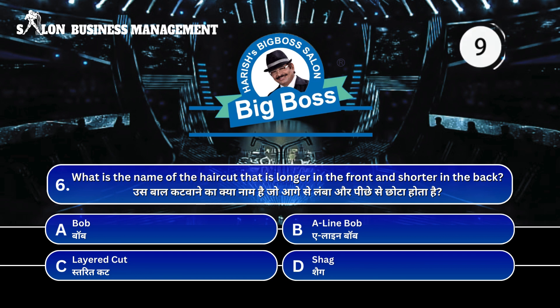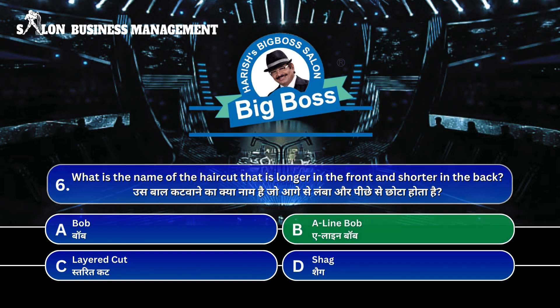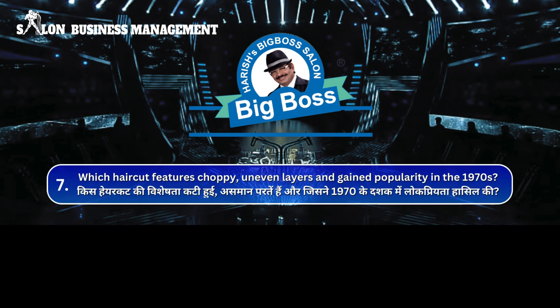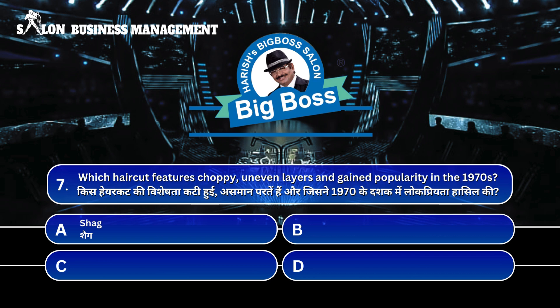Question 7. Which haircut features choppy, uneven layers and gained popularity in the 1970s? Kis haircut ki visheshata kati hui asmaan paraten hain aur jisne 1970 ke dashak mein lokapriyata hasil ki? A. Shag, B. Pixie, C. Bun Cut, D. Undercut.